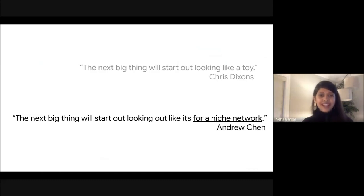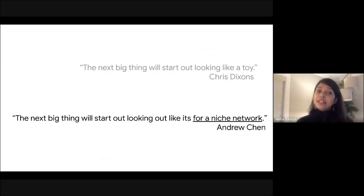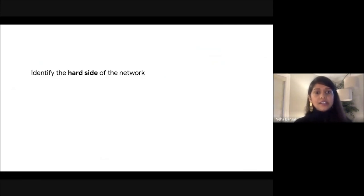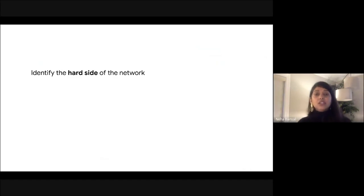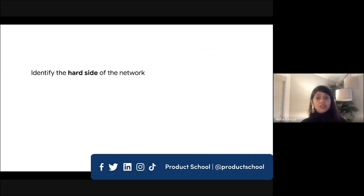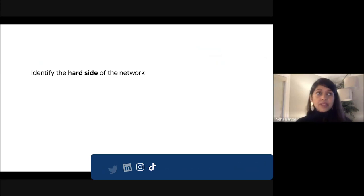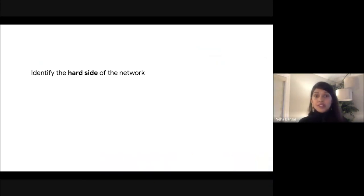So how do you build an atomic network? I'll summarize it in three steps. First, identify the hard side of the network — the minority of users that create disproportionate value and as a result have disproportionate power. For example: content creators for social networks, drivers for Uber, developers for the App Store, managers that create documents for workplace apps, sellers for marketplaces, and volunteers who write articles for Wikipedia. Identify your hard side.